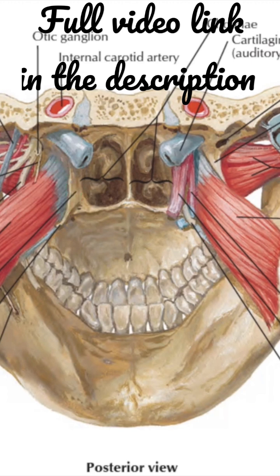It takes origin from the scaphoid fossa of the medial pterygoid plate, from the lateral and fibrous lamina of the auditory tube. It also takes origin from the sulcus tubae and the spine of the sphenoid bone.